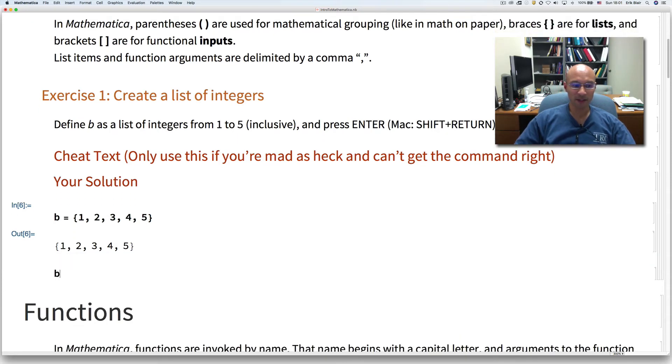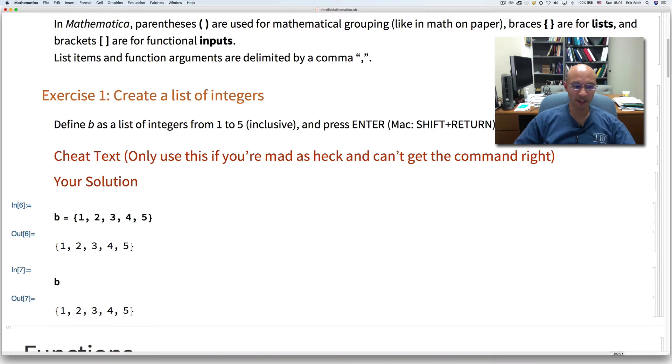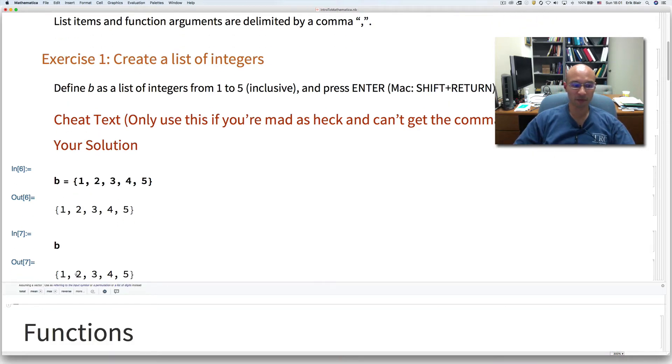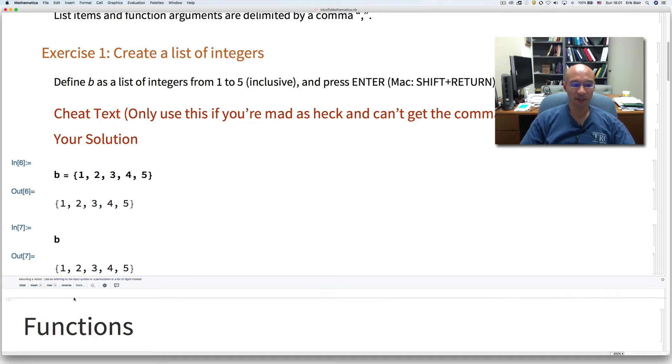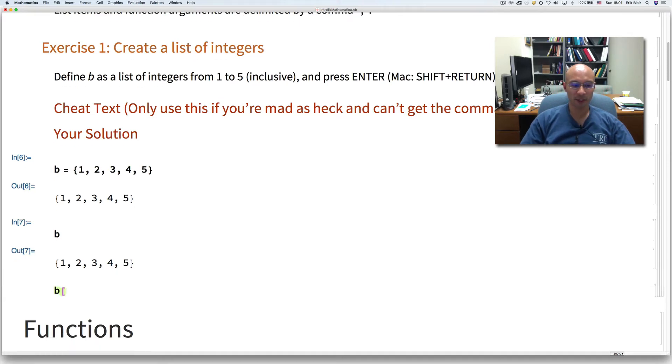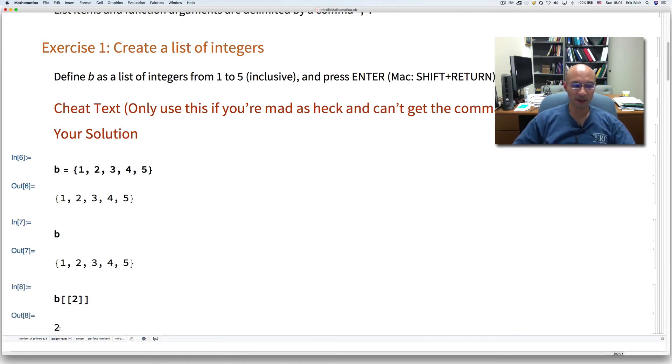And I can type b in a later cell and evaluate it and it spits out the thing that is stored in the variable b. I can reference this by typing b and then I put in double brackets. And if I put in 2, I get the second element. So let's evaluate that and it spits out 2. I can change it to the fifth element and I get 5. So that's just an example here of making a list and then referencing the elements of that list.